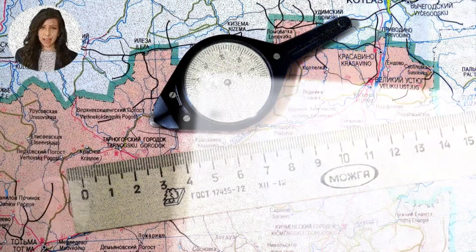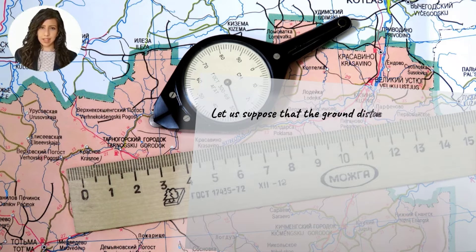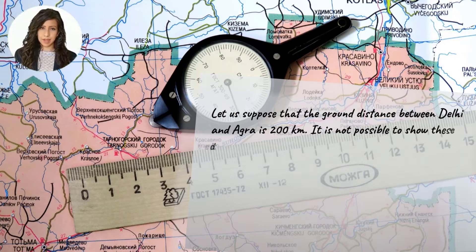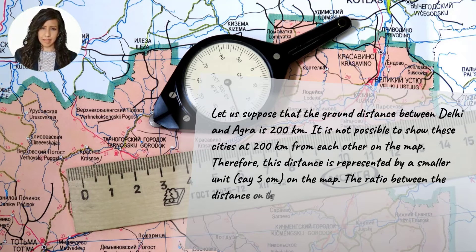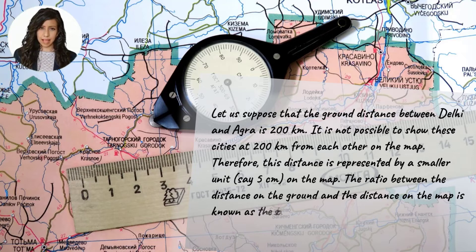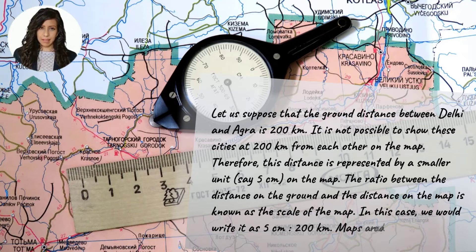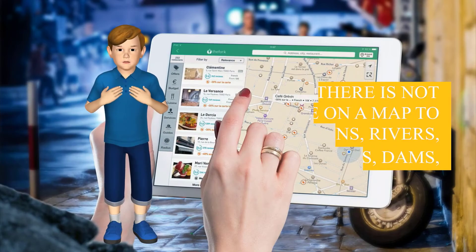Maps are always drawn to scale. Scale: Prithvi ka actual size bohat bada hai, isliye ise map par dikhana sambhav nahi hai. Maan lijiye ki Dilli aur Agra ke beech ki duri 200 km hai. In shahron ko ek doosre se 200 km ki duri par map par dikhana sambhav nahi hai. Isliye is duri ko map par ek smaller unit — maan lijiye 5 cm — dwara darshaya jata hai. Zameen par duri aur map par duri ke beech ke ratio ko map ke scale ke roop mein jana jata hai. Is case mein hum ise 5 cm : 200 km likhenge. Maps hamesha scale par hi banai jati hain.